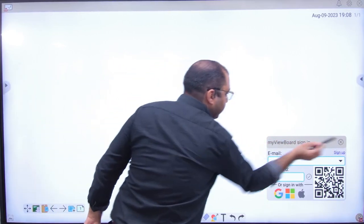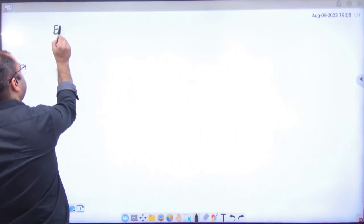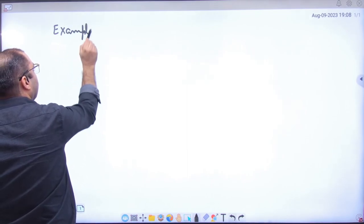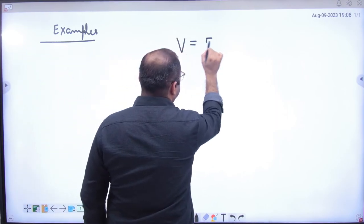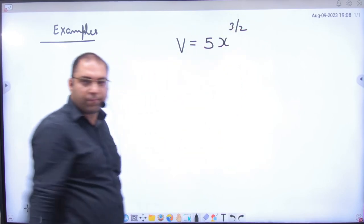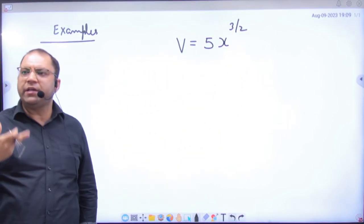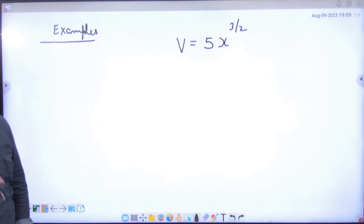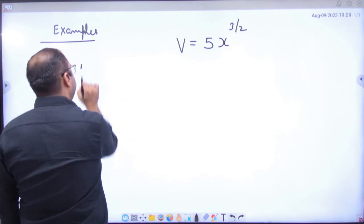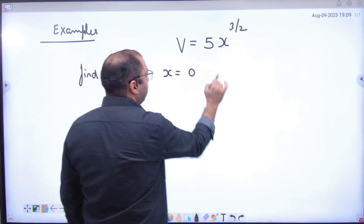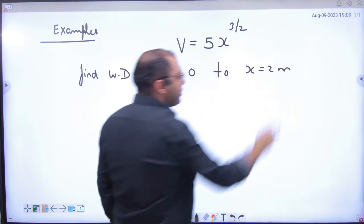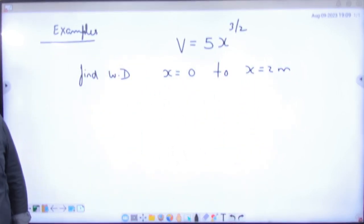Let's see, there are examples. Suppose v's value I have given you 5 into x raised to power 3 by 2. So I have given you an instantaneous velocity. If x's value changes, then v's value will change. And you have to find amount of work done when body moves from x equals 0 to x equals 2 meter. So what will you tell the value of the amount of work done?